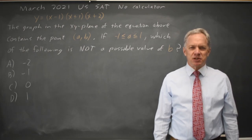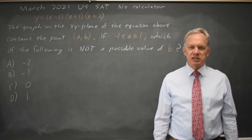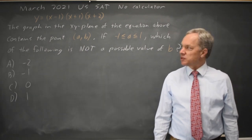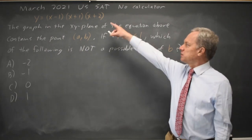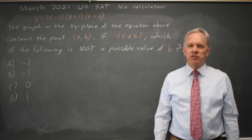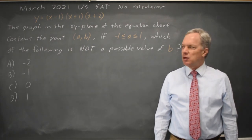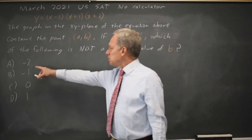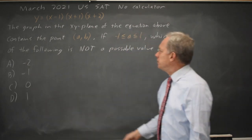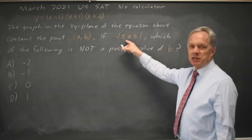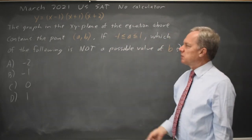I'm Dr. Roger, and this question is from the March 2021 U.S. SAT non-calculator section. College Board gives the equation of a cubic in factored form and asks which of these is not a possible y-value for an x value between negative 1 and positive 1.